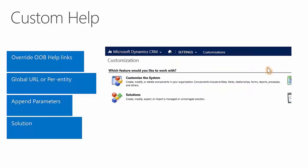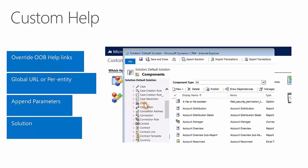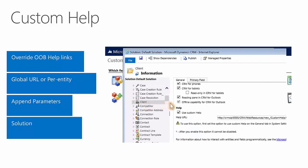If a system customizer does not use the global custom help URL, they will need to set custom help pages at a per-entity level. This allows a system customizer to provide custom help without overwriting all of the predefined Microsoft Dynamics CRM help. With the ability to set it at the entity level, it allows a system customizer to only update the help content for entities they have customized and keep the out-of-the-box help content for areas that have not been customized.